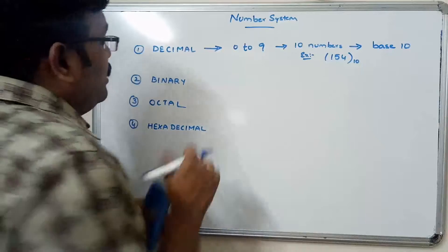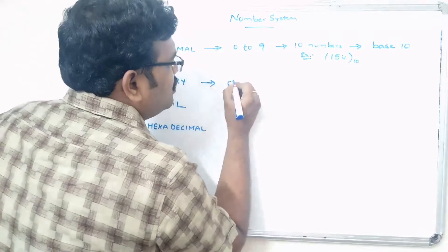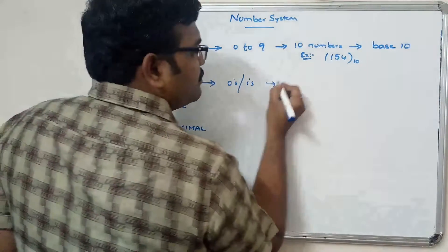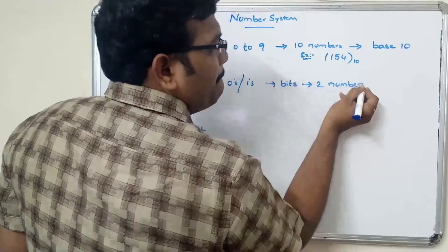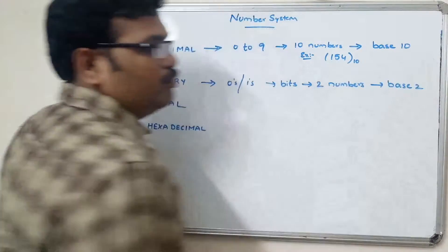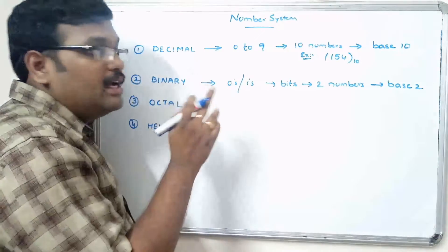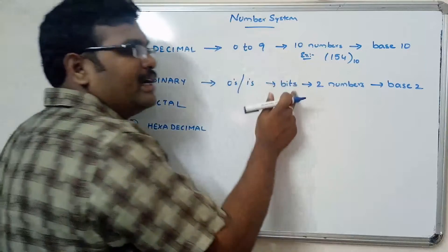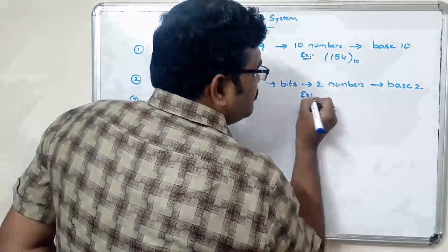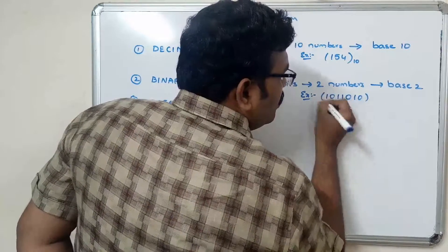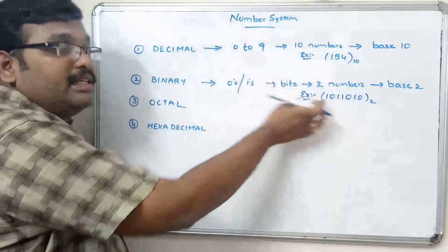Coming to binary — you know that the system understands binary values, that means either zeros or ones, which we call bits. Only two numbers are there, so it is base 2. Any number is represented in terms of zeros and ones only. For example, 1010101010 base 2 — this number is represented only in zeros and ones, and base 2 represents this is a binary number.